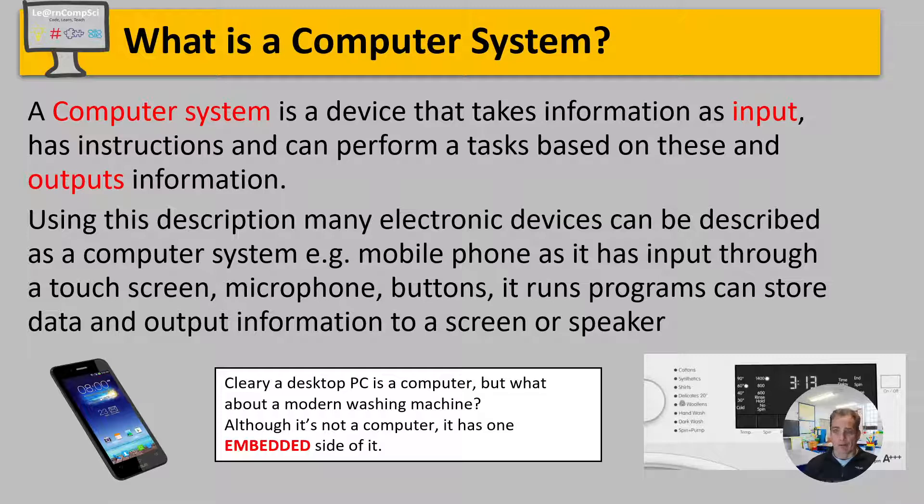I define a computer system as something that takes inputs and then it can using instructions it can process those inputs to determine some outputs. Okay now based off of that sort of description actually lots of different devices we could consider as being a computer so for example a mobile phone well does it have input yeah you could have a touch screen there's microphones there's buttons on it does it kind of have programs inside it of course it does and it stores data and it can then take that processed information and it can output it to something like the screen or perhaps it's an audio kind of app or you know to a speaker or something like that so that one's not so difficult to comprehend.